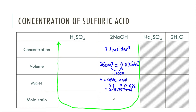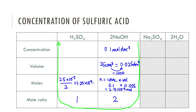For the mole ratio, we look at the balanced equation: 2 moles of sodium hydroxide react with only 1 mole of sulfuric acid. So if we have 2.5 × 10⁻³ moles of sodium hydroxide, we need to halve that to find the moles of sulfuric acid. That gives us 2.5 × 10⁻³ ÷ 2 = 1.25 × 10⁻³ moles of sulfuric acid.